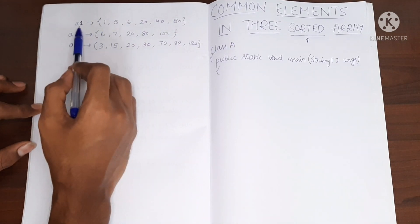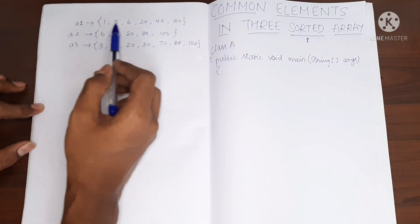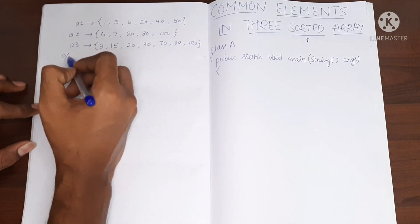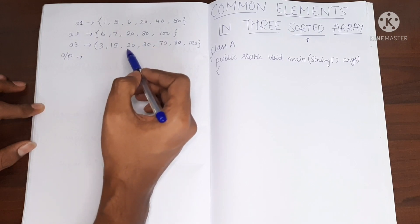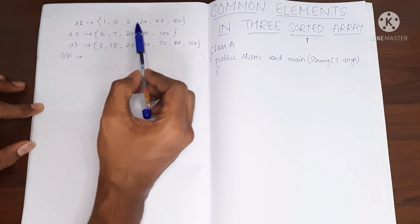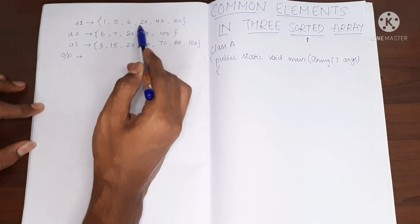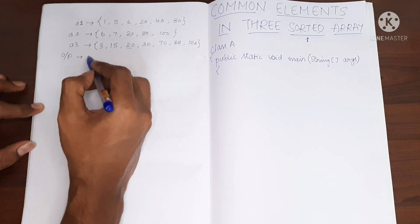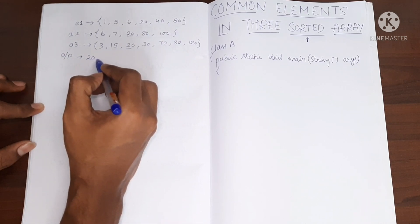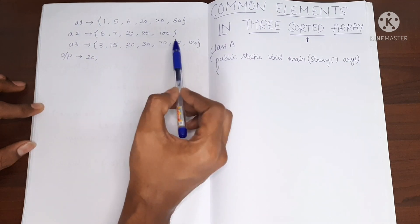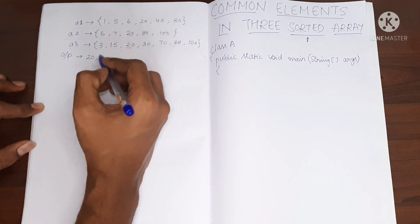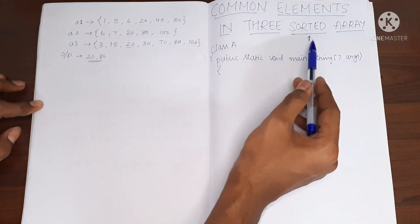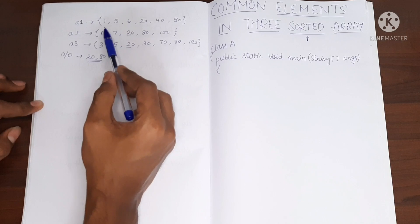Let's say we have three arrays which are sorted with these values. Our required output is the common element among all three arrays. You can see 20 is common in all three, so the first output will be 20. Then 80 is also common in all three arrays, so that is our required output.